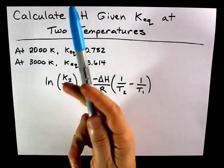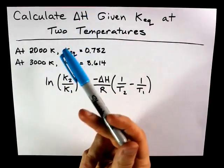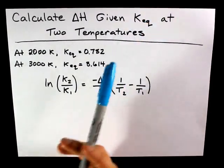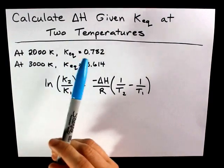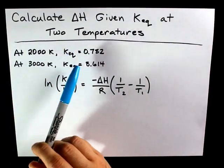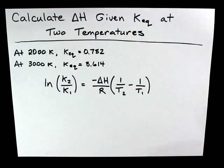All right, today, calculating delta H enthalpy change if you're given the equilibrium constants Keq at two different temperatures. I've given you the data here, one Keq at 2,000 Kelvin, another Keq at 3,000 Kelvin.